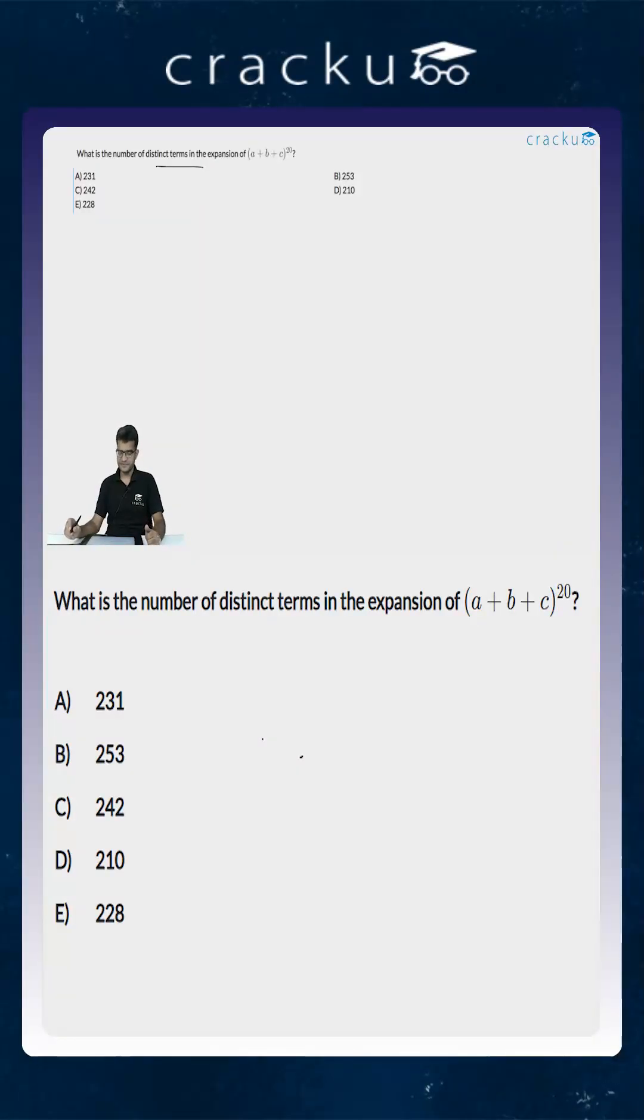We are asked to find out the number of distinct terms in the expansion of (a + b + c) to the power 20. Any term in the expansion of (a + b + c)^20 will be of the form some constant k times a^x times b^y times c^z.